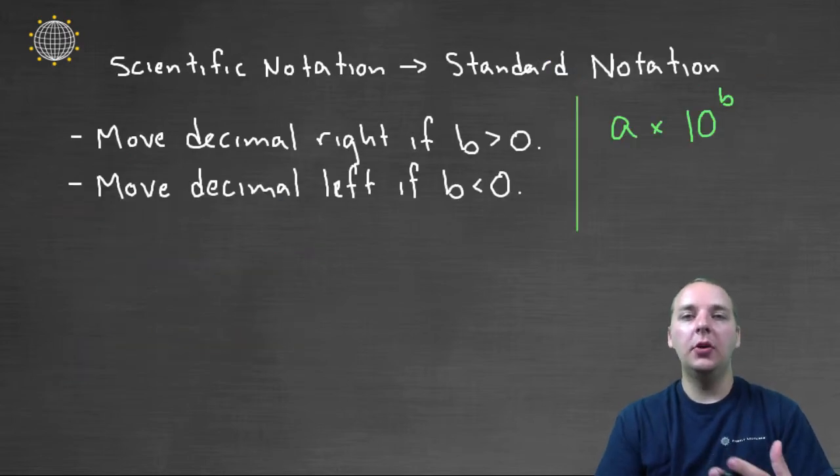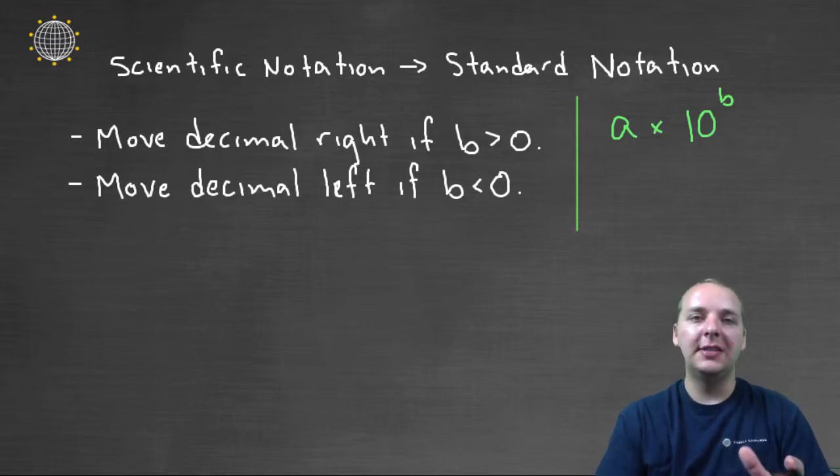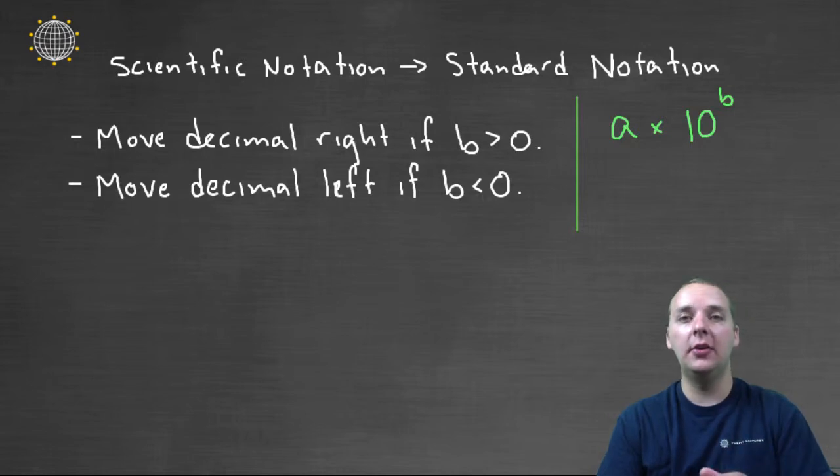Now probably one of the more common questions that you'll see is that someone will ask you to convert back and forth from scientific notation into what we call standard notation. To go from scientific notation back to standard notation, you're basically going to be moving the decimal of a left or right, and whether it's left or right depends on your exponent b. You're going to move the decimal right if b is positive, because you're making the number bigger. You have multiples of 10, and then you're going to move the decimal left if the exponent is negative.